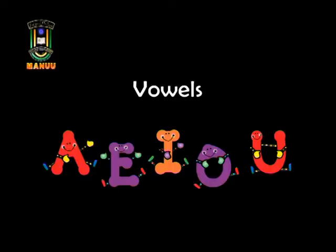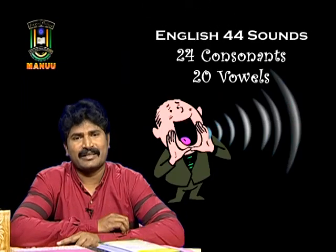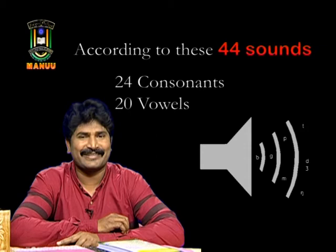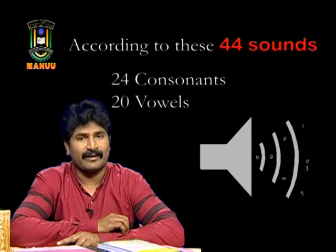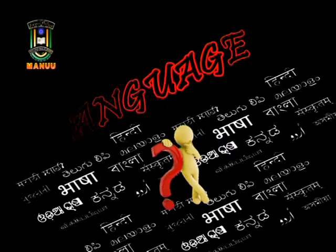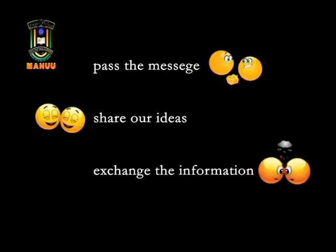You are pretty much aware of the five vowels and 21 consonants, but what about the 44 sounds? According to these 44 sounds, there are 24 consonants and 20 vowels. I know you would be surprised — yes, all 26 alphabets represent 44 sounds. That's why we always find certain sounds difficult — the sounds not existing in our mother tongue feel difficult, while sounds that do exist in our mother tongue feel easy. Language is all about passing messages and sharing ideas.